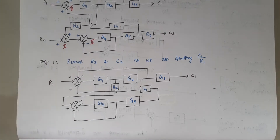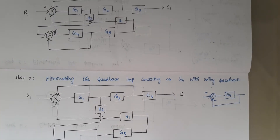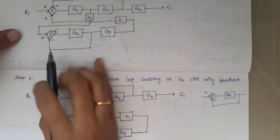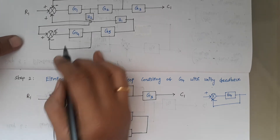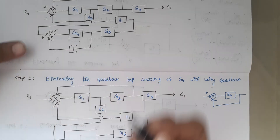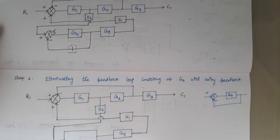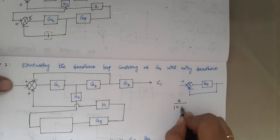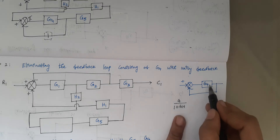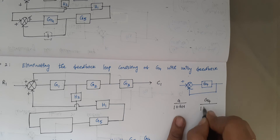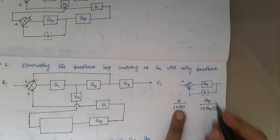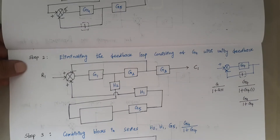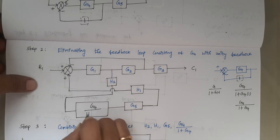Step 2 is eliminating the feedback loop of G4 with unity feedback. The basic formula for reducing a feedback loop is G divided by 1 plus GH for negative feedback. Here, G is G4 and H is 1 (unity), so the result is G4 divided by 1 plus G4. We write this expression in place of that loop.